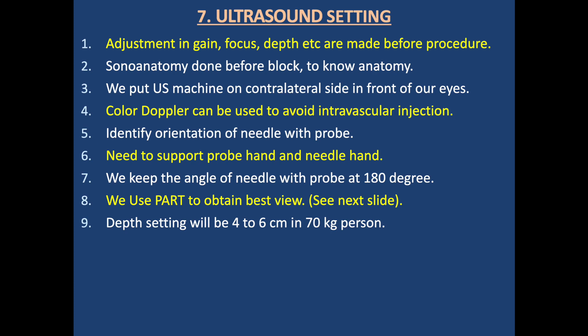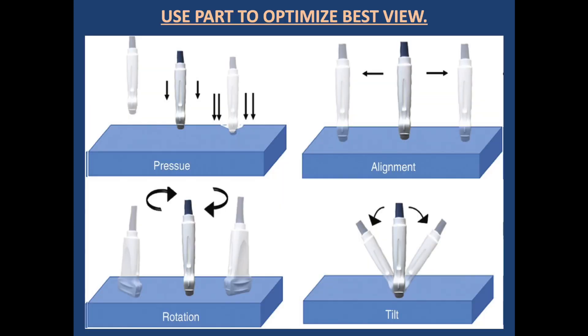Depth setting will be 4-6 cm for a 70 kg patient. This diagram shows probe maneuvering, in which we apply pressure, alignment, rotation, and tilt to have the best view. Especially in this block, we perform anisotropy, which helps to get the best view.